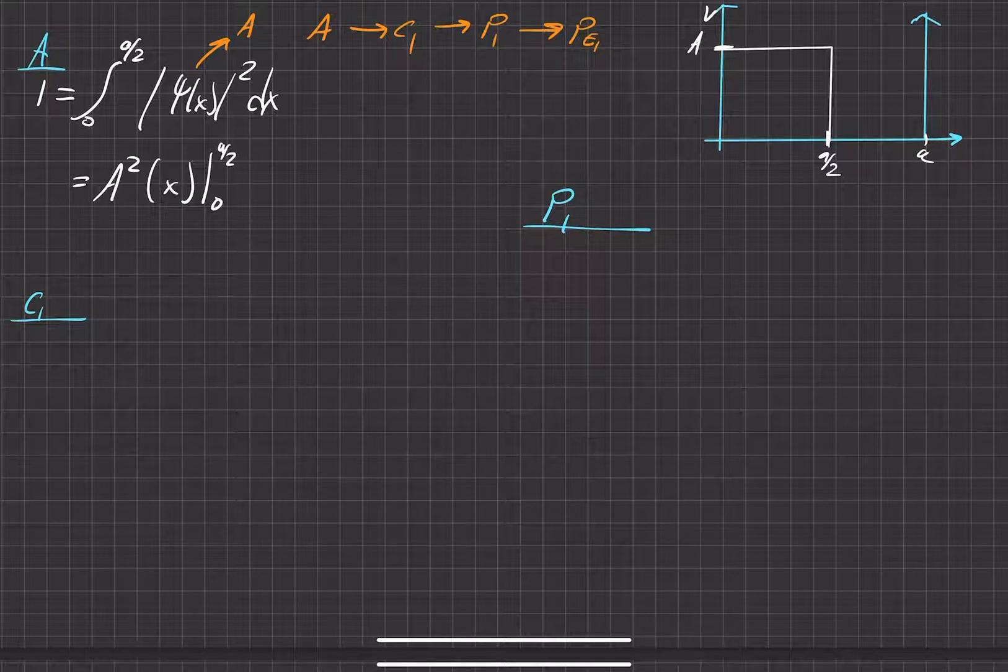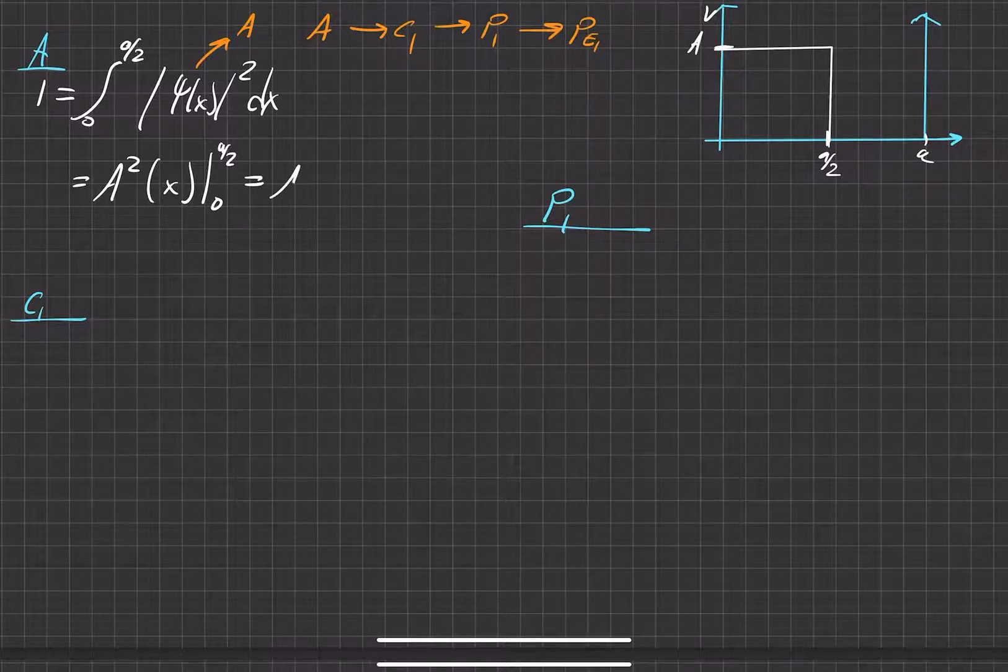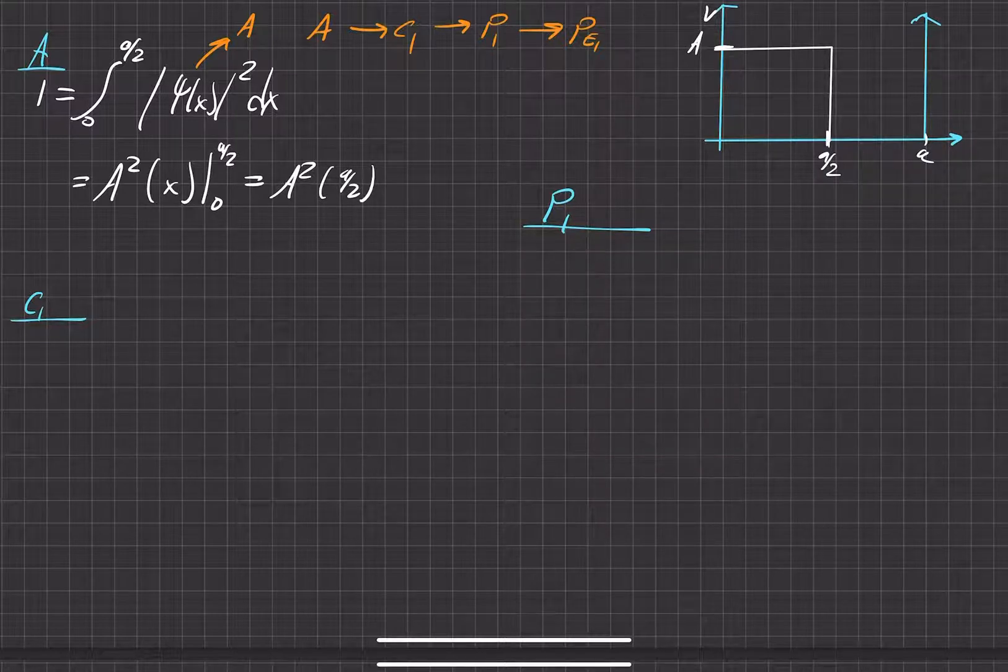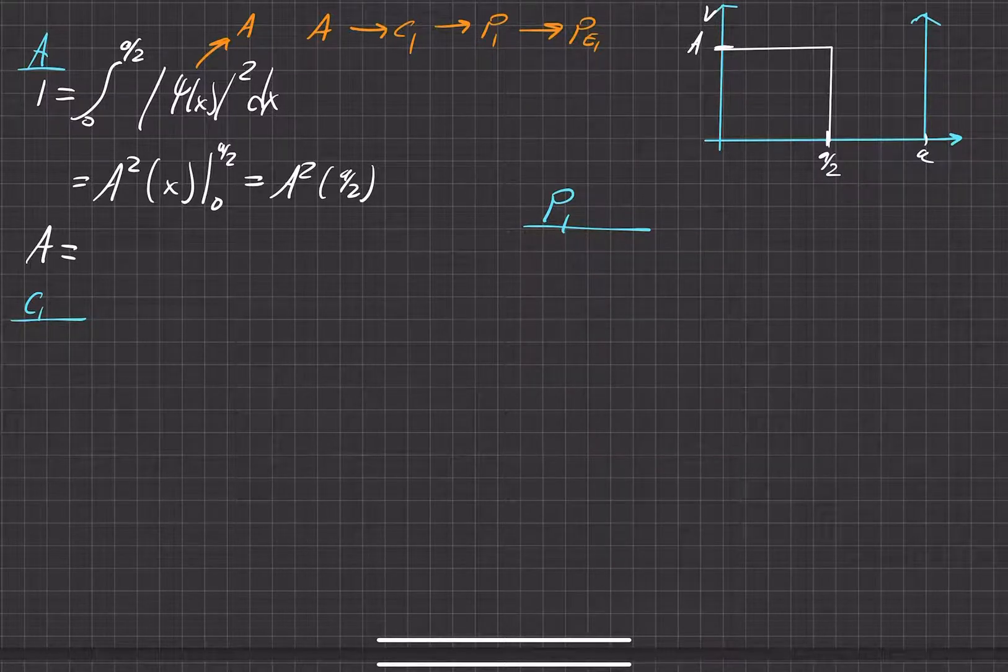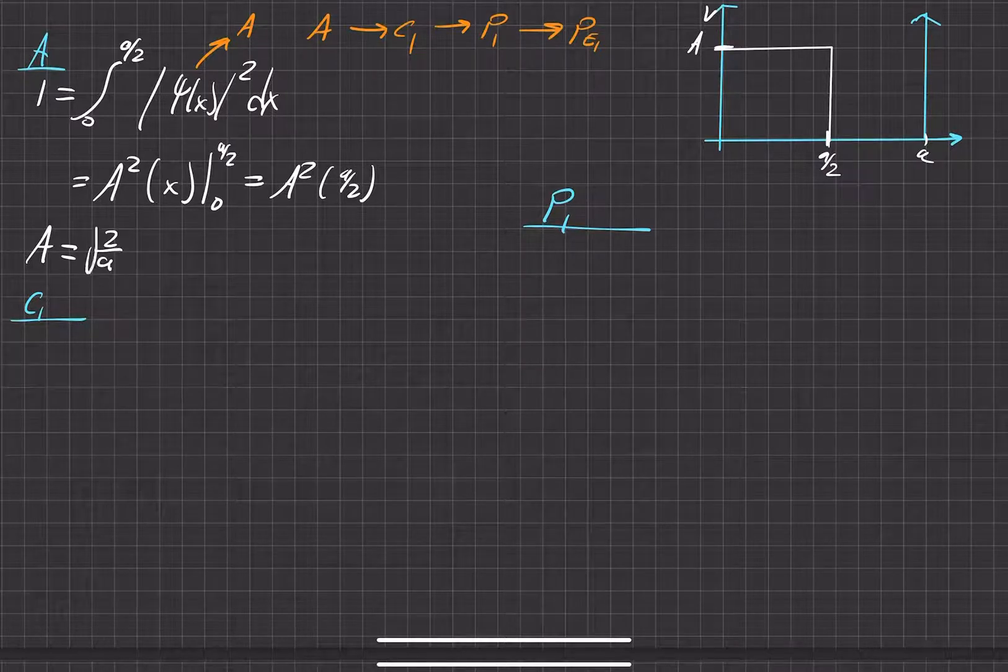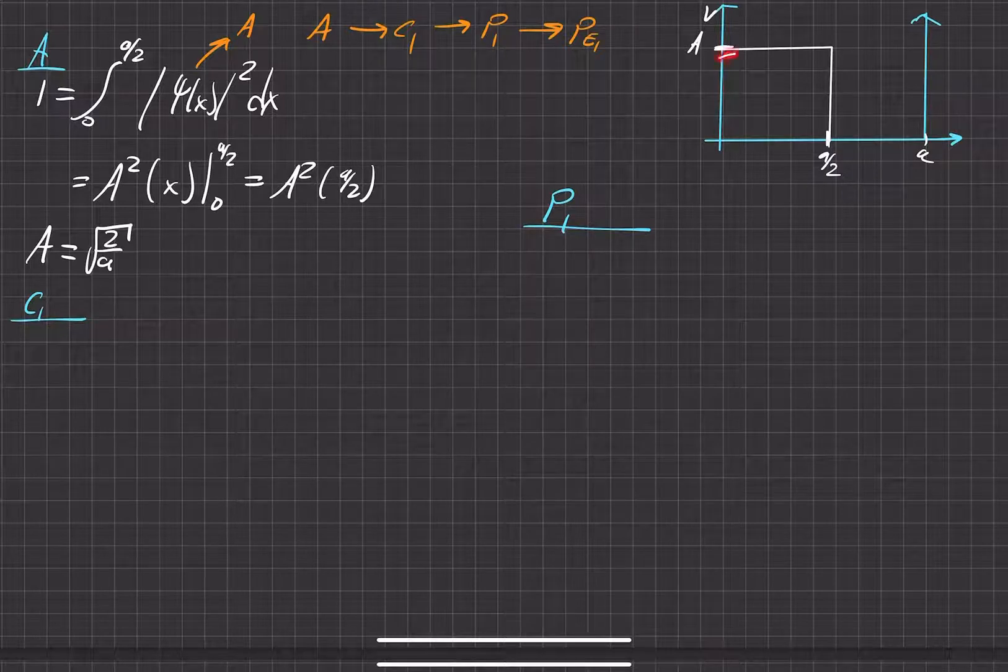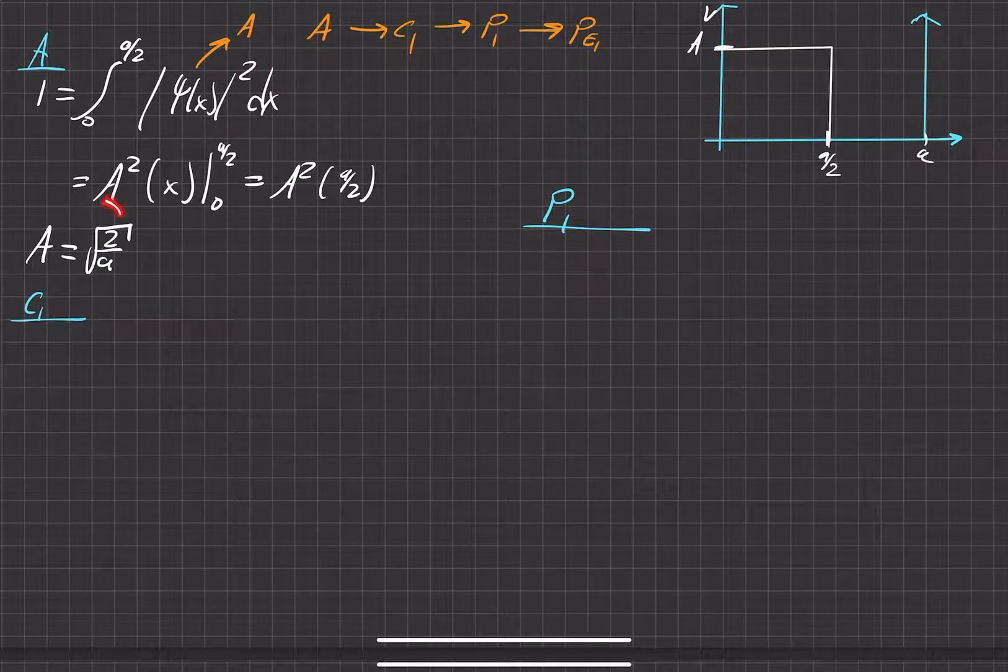And whenever we evaluate that, that's just A squared times a over 2. So far so good. Now we solve for A, so A is equal to square root of 2 over a. We found the normalization constant, so we have an actual wave function to deal with. It's just a constant, the square root of 2 over a right here.